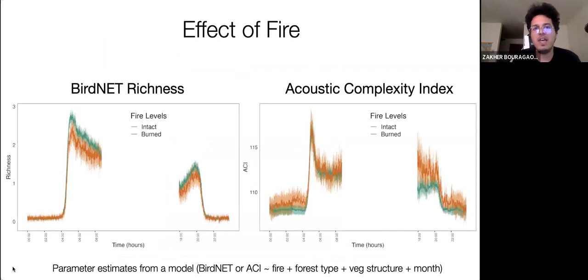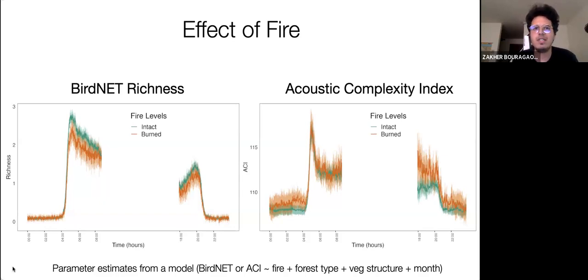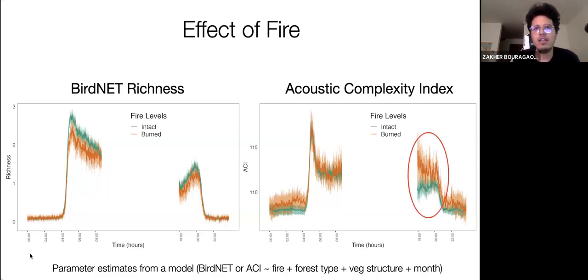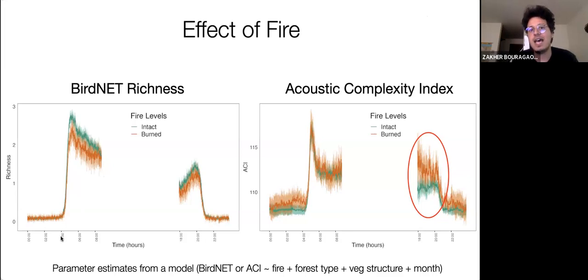Regarding the effect of fire, the two graphs show how bird richness and ACI change throughout the day in burned forest (orange) and intact forest (green). The bird richness graph shows similar patterns in both types of forests; however, bird richness is higher in intact forests during the day, with a distinct peak at dawn and dusk. On the right, the ACI graph mostly follows the same pattern in both intact and burned forest; however, complexity in burned forest is higher, especially in the evening. Overall, burned forests have higher acoustic complexity, which is the opposite of bird richness, which is higher in intact forest.